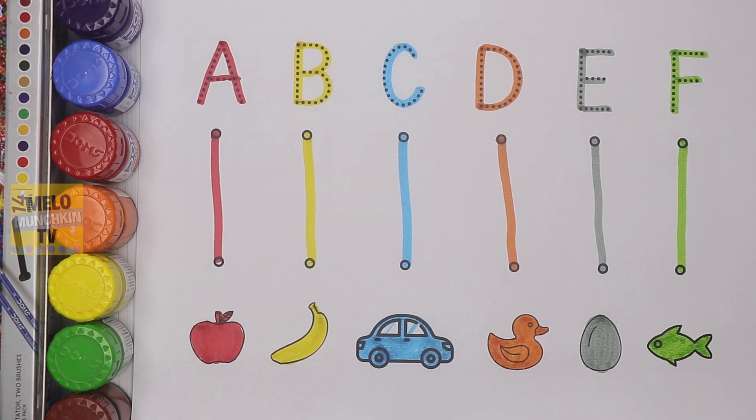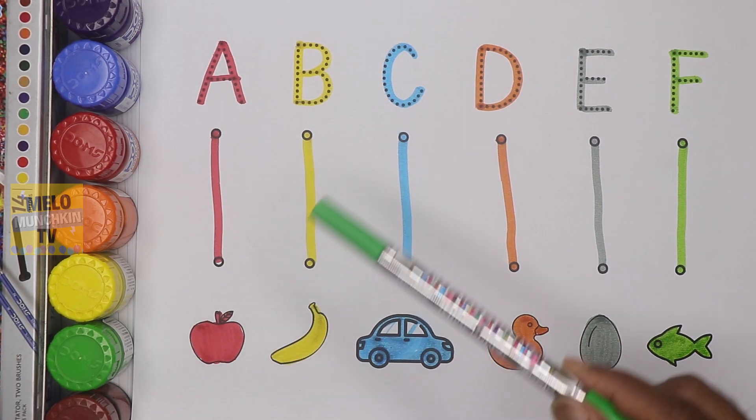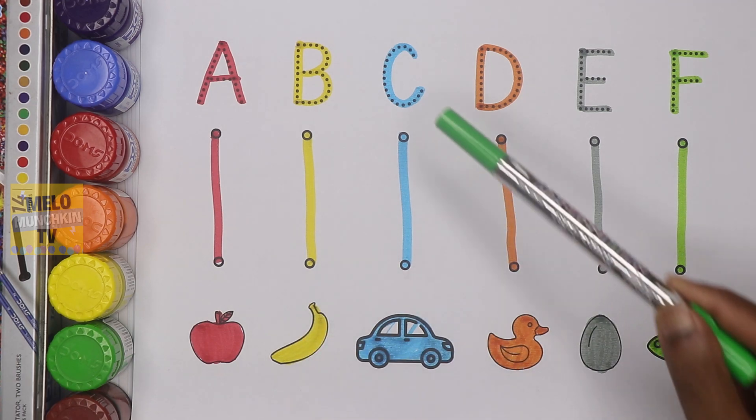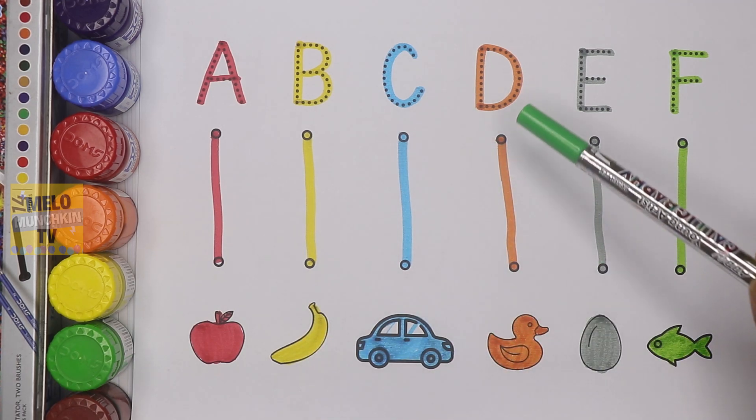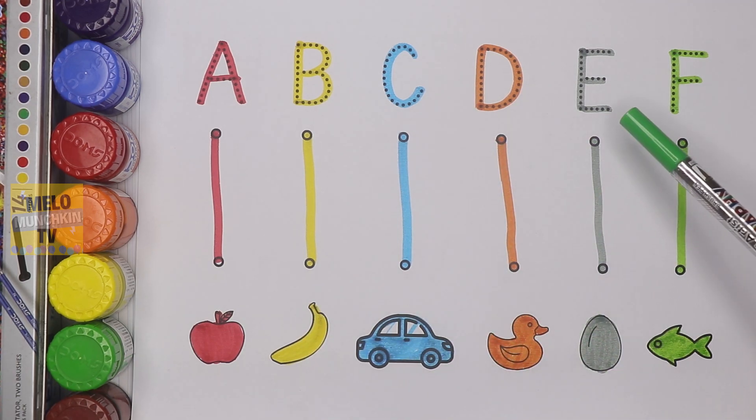So we are done. Let's repeat once again. A for apple, B for banana, C for car, D for duck, E for egg, and F for fish. So that's it for today kids. I hope you like this video and if you like it hit a thumbs up and share this video with your friends. See you in my next video. Till then take care and bye bye.